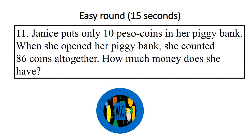Question 11: Janice puts only 10-peso coins in her piggy bank. When she opened her piggy bank, she counted 86 coins altogether. How much money does she have?